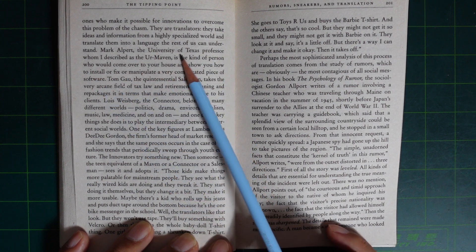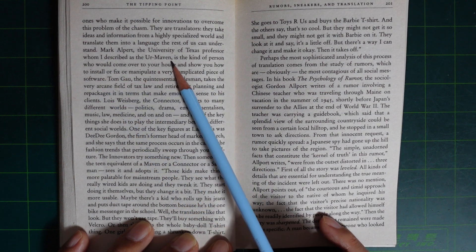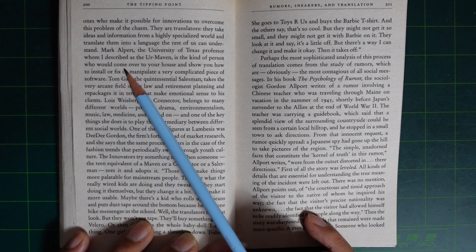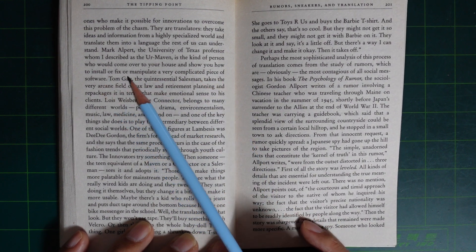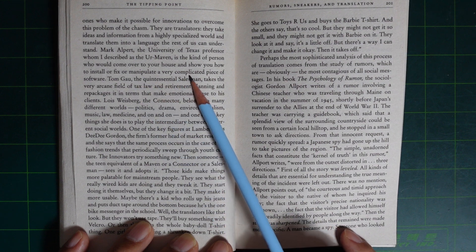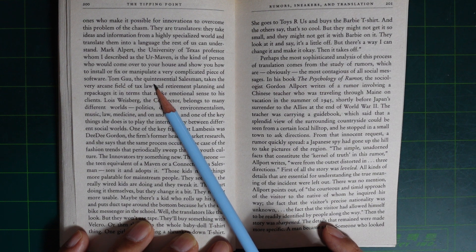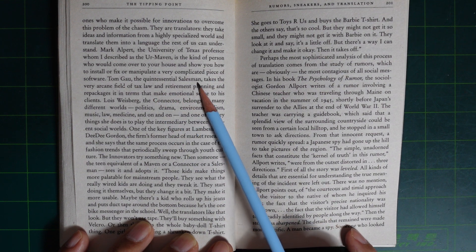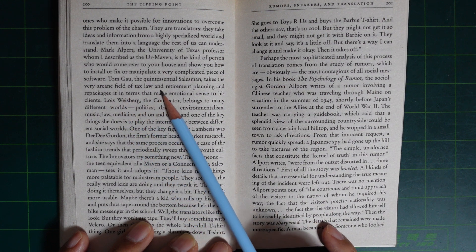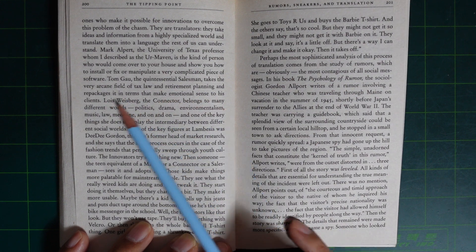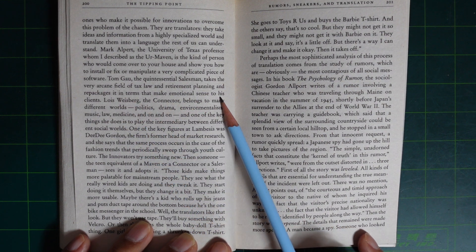Mark Alpert, a University of Texas professor who I described as a Maven, is the kind of person who would come over to your house and show you how to install or fix or manipulate a very complicated piece of software. Tom Gau, the quintessential salesman,